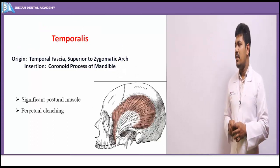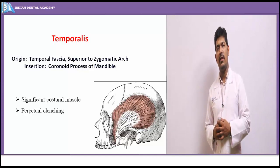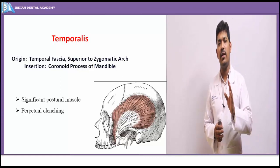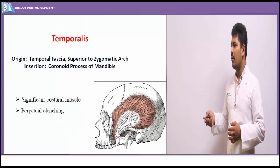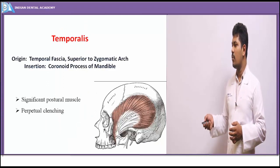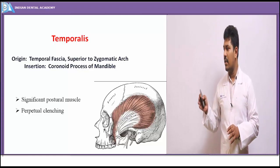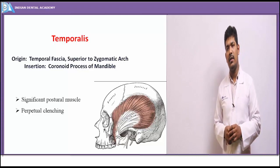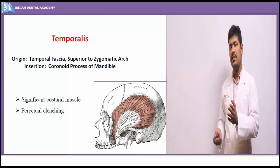The third most important muscle is the temporalis, which is essentially an ever-working muscle — its only rest position is when the patient is supine. It originates from the temporal fascia superior to the zygomatic arch and inserts into the coronoid process of the mandible, holding the TMJ complex in place. It is the third most important muscle contributing to MPDS.